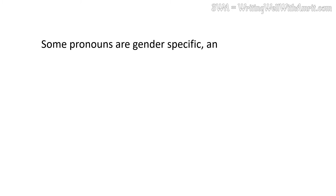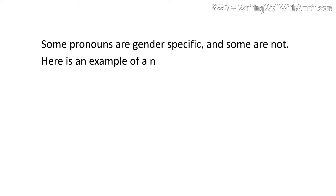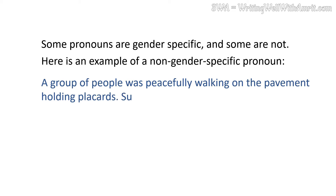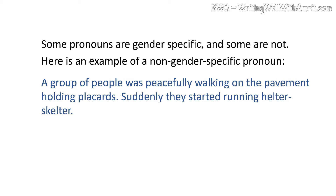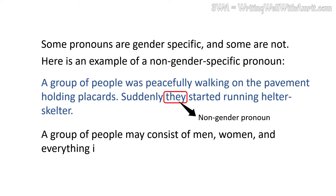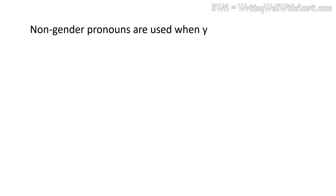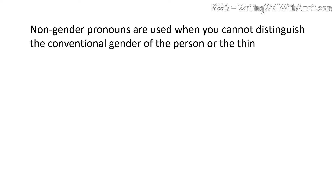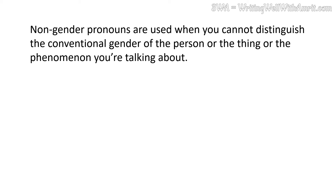Some pronouns are gender-specific and some are not. Here is an example of a non-gender-specific pronoun: 'A group of people was peacefully walking on the pavement holding placards. Suddenly, they started running helter-skelter.' 'They' is a non-gender pronoun. A group of people may consist of men, women, and everything in between. Non-gender pronouns are used when you cannot distinguish the conventional gender of the person, thing, or phenomenon you are talking about.